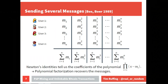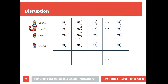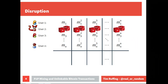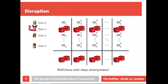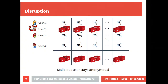The cool thing about this approach is that it works in a constant number of rounds and it always works. However, a malicious user can simply send random garbage instead of the correct values, making all the sums random garbage. The whole protocol is disrupted and all information is destroyed. Even worse, the DC-net ensures the malicious user stays anonymous, so we can't identify or exclude them.